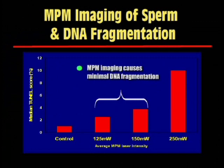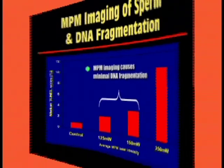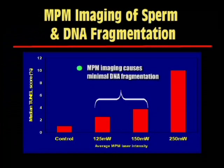Since MPM uses a laser to image, we also evaluated its safety with different laser powers. We used the TUNEL assay to study sperm DNA fragmentation after imaging. The Y axis demonstrates the TUNEL score in percentage, and the X axis demonstrates the average laser power used for imaging in milliwatts. We see that at powers of 125 and 150 milliwatts, which are commonly used for imaging, there is no statistically significant DNA fragmentation compared to controls. However, with higher power imaging at 250 milliwatts, which is not required for routine use, we see an increase in the TUNEL score. Hence, MPM imaging at low powers appears to be a safe imaging modality.